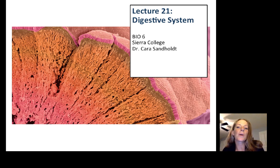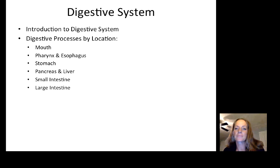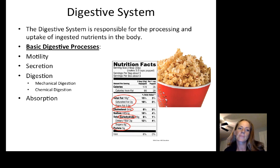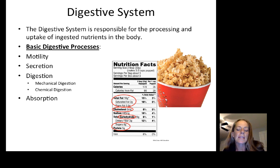This is Lecture 21 on the digestive system. We're going to go one by one from the mouth all the way through the large intestine, talking about the different digestive processes location by location. The digestive system is responsible for the processing and uptake of ingested nutrients into the body — food gets broken down and taken into the body through the digestive tract.